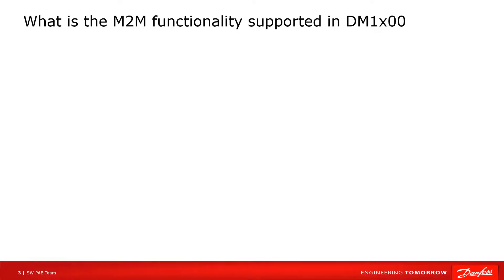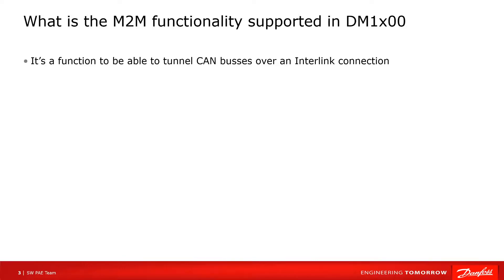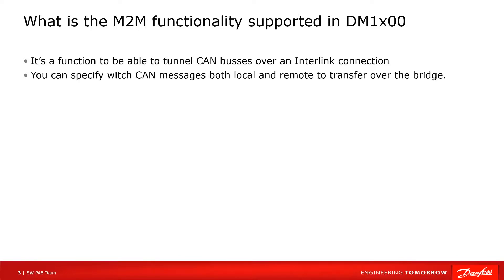What is the M2M functionality supported in the DM1X00? It's a function to be able to tunnel CAN buses over an interlink connection. You can specify which CAN messages, both local and remote, to transfer over the bridge.